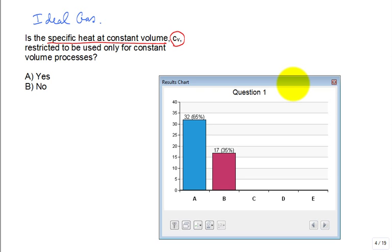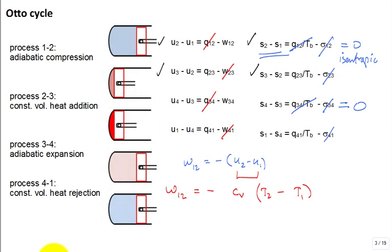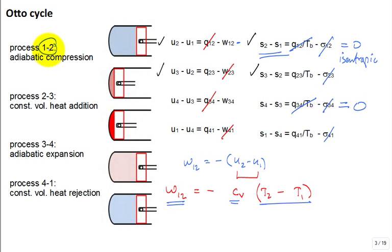A lot of us said yes, it is restricted. Let me address that. We're going to use this equation to calculate work one to two. It came from the first law — there's C sub V delta T. Was the process one to two constant volume? It's adiabatic compression — it's not constant volume. The volume changes, right? And yet here we have C sub V being used for a non-constant-volume process. That really appears to be a conundrum.